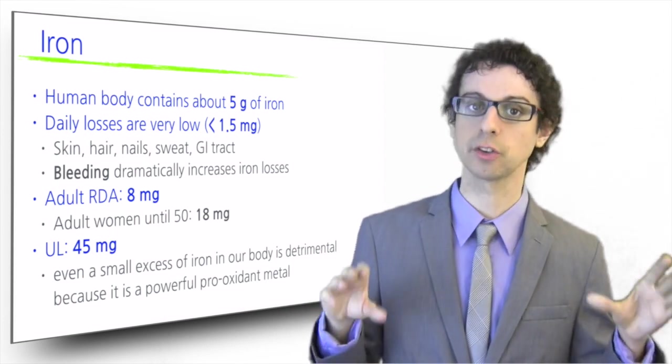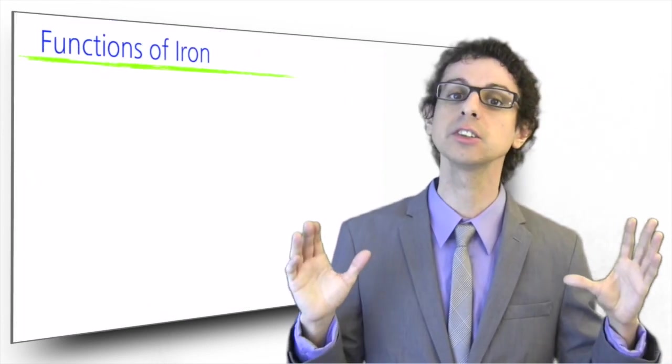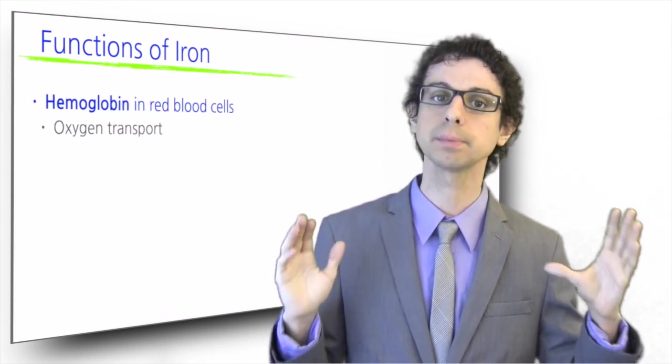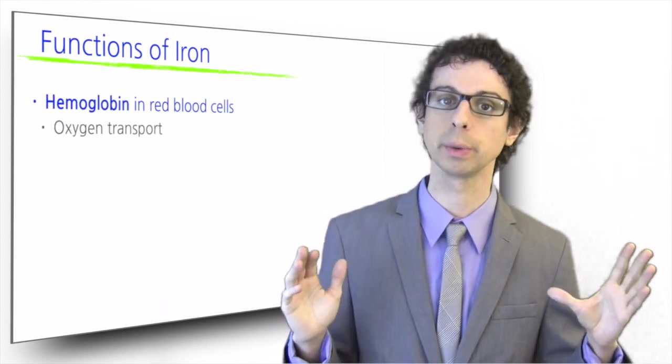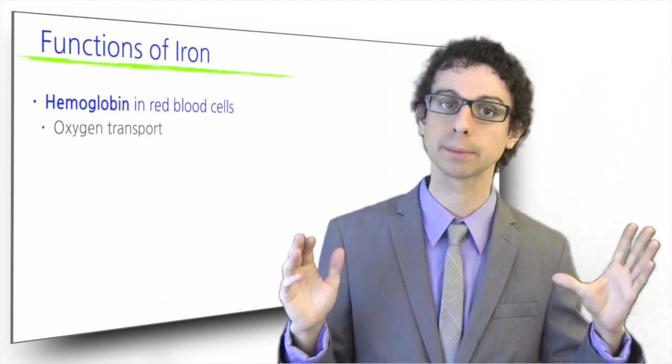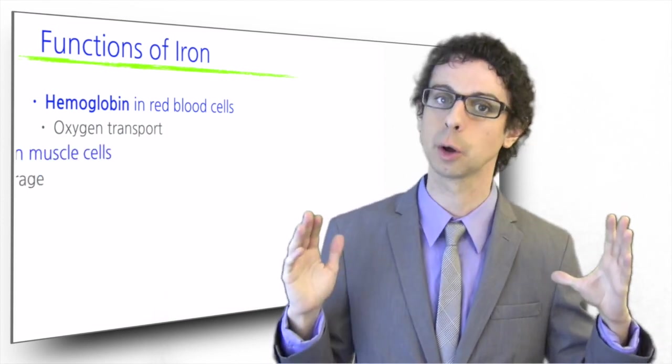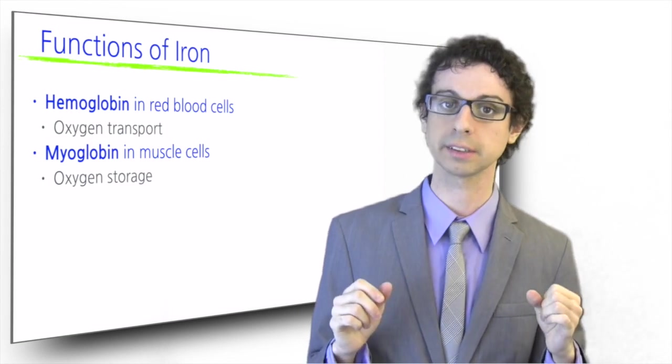The main function for iron in our body is oxygen transport and storage. Iron is part of the heme group of hemoglobin for oxygen transport in red blood cells and of myoglobin for oxygen uptake and storage in muscle cells.